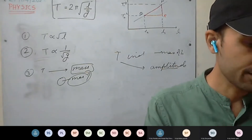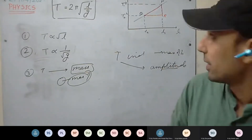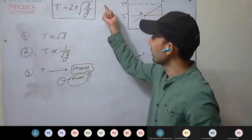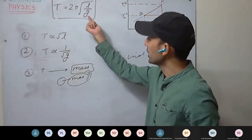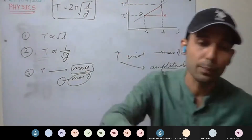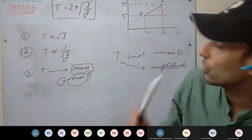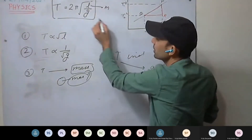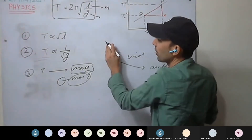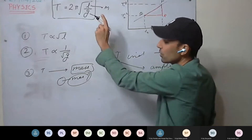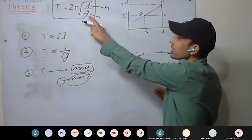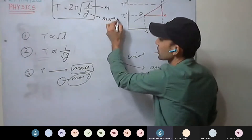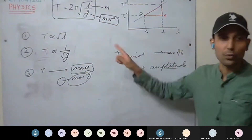The expression for time period is T = 2π√(L/G), where L is the effective length and G is the acceleration due to gravity. Always remember the units when solving: length must be in meters and G is in meters per second squared.